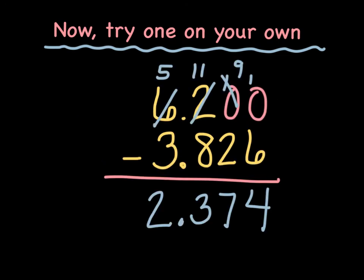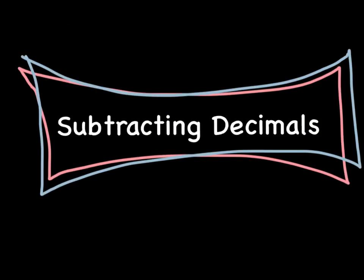Hopefully you were able to get the answer of 2 and 374 thousandths. In this lesson, we have learned how to subtract decimals.